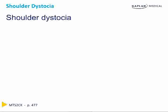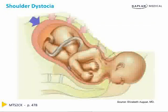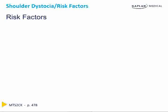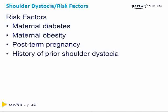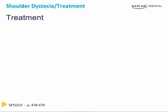Shoulder dystocia is entrapment of the anterior shoulder behind the pubic symphysis after delivery of the fetal head. Risk factors include maternal diabetes, maternal obesity, post-term pregnancy, and a history of prior shoulder dystocia. Any factor indicating the fetus is too big for the pelvis or the pelvis is too small for the baby is a risk factor. The first sign may be the fetal head delivering then retracting against the perineum, known as the turtle sign.